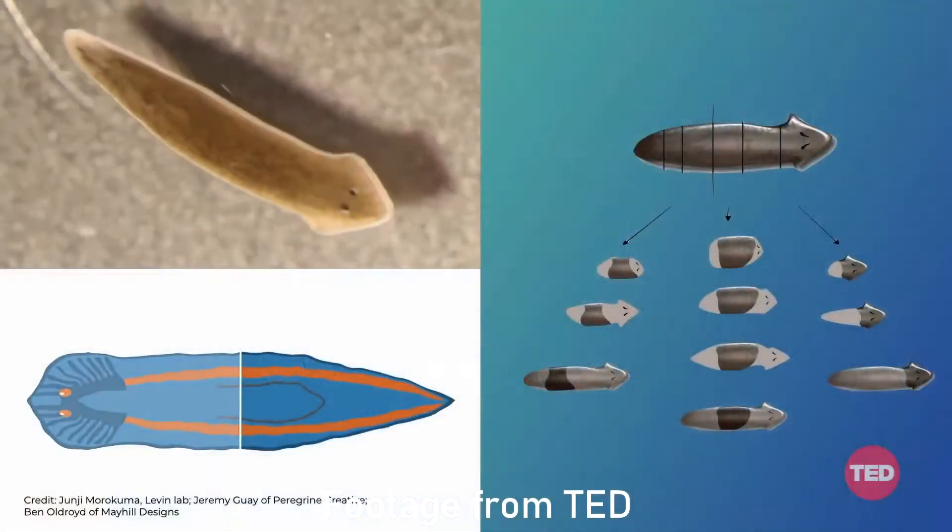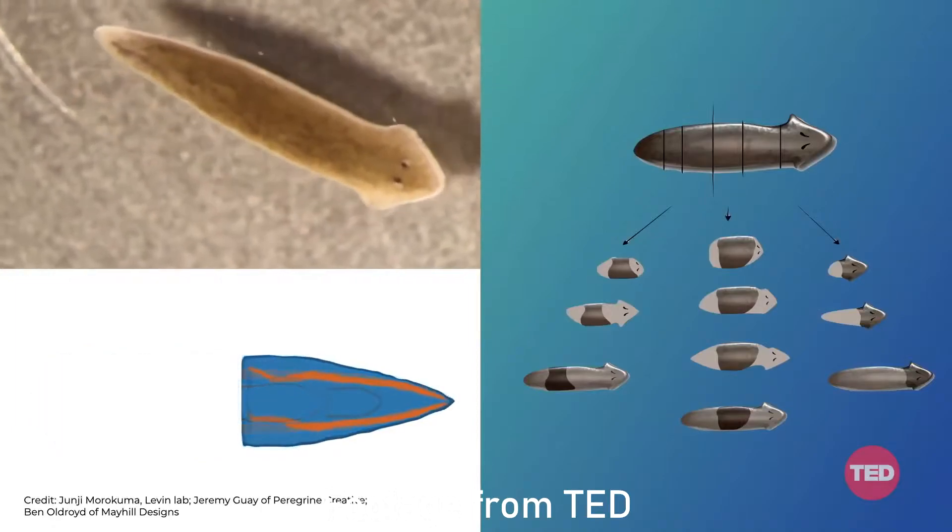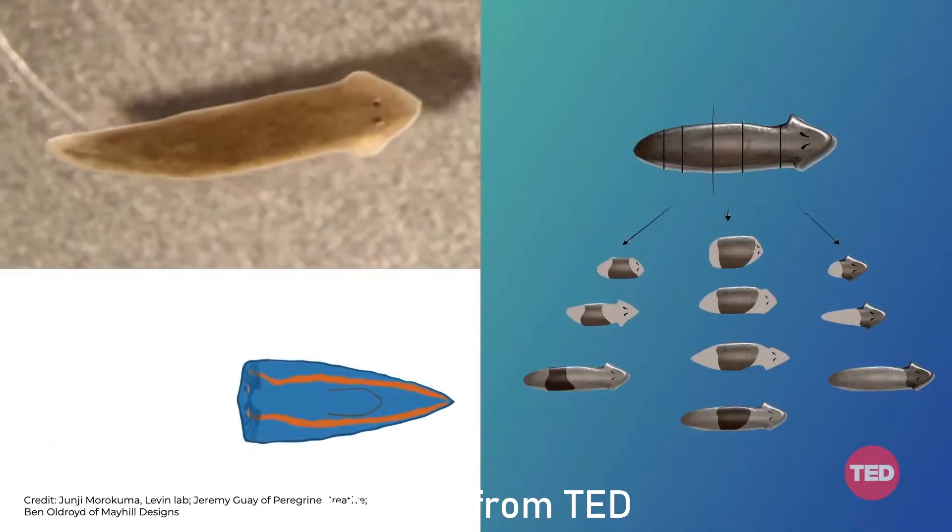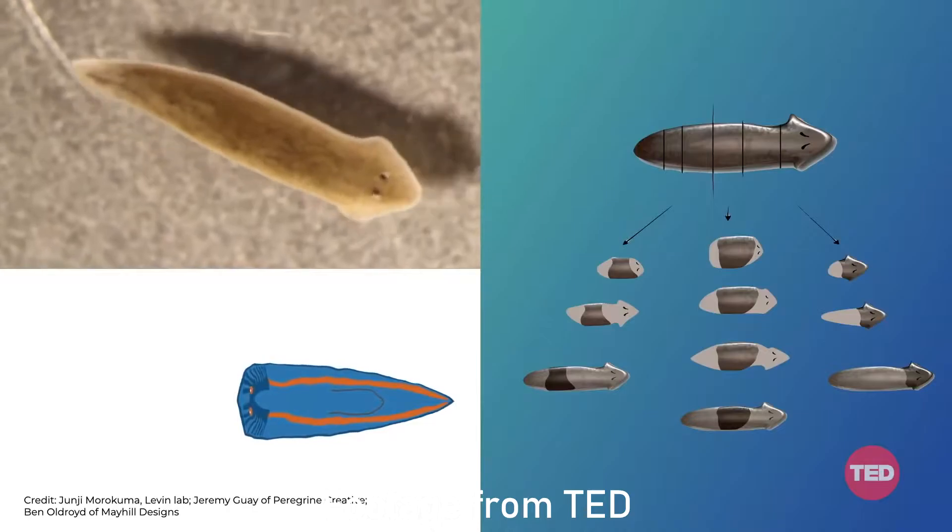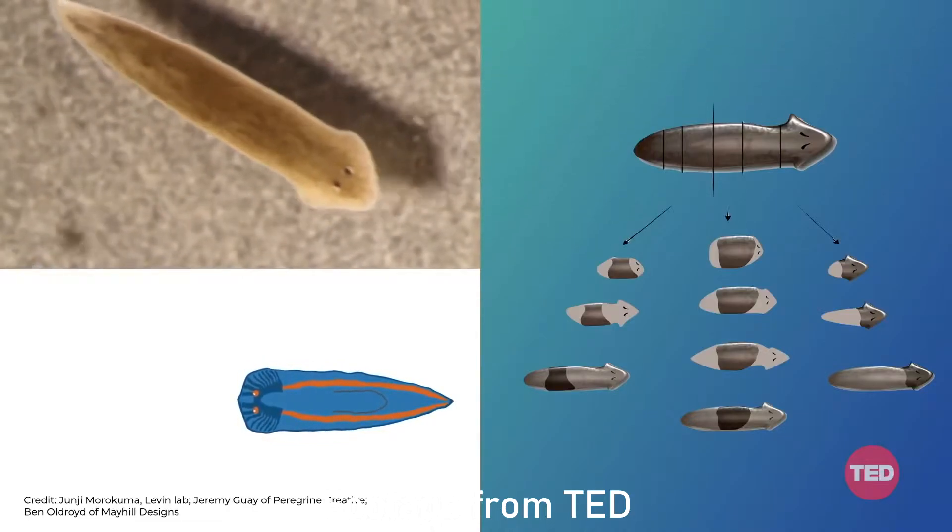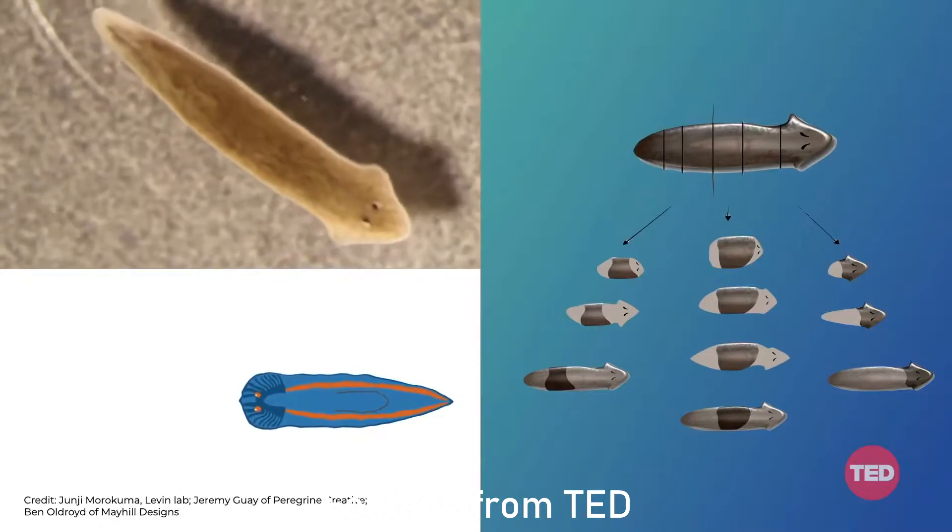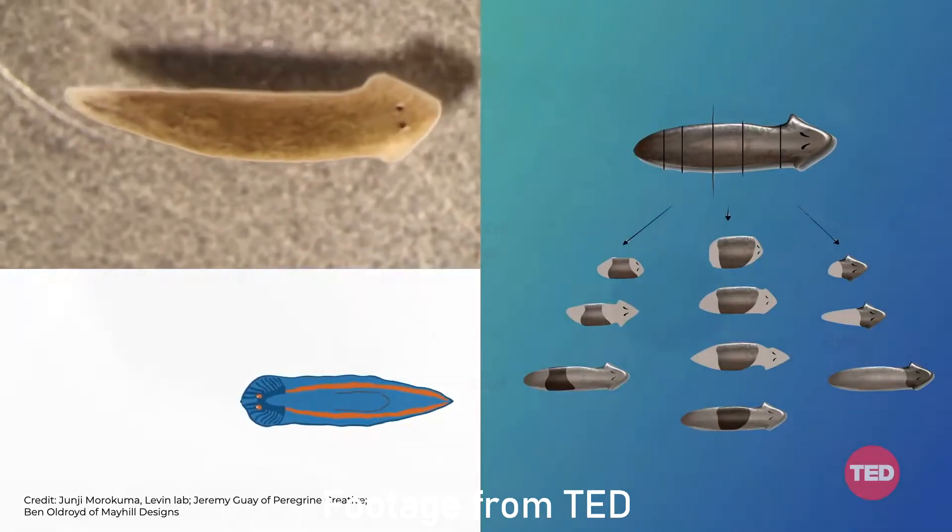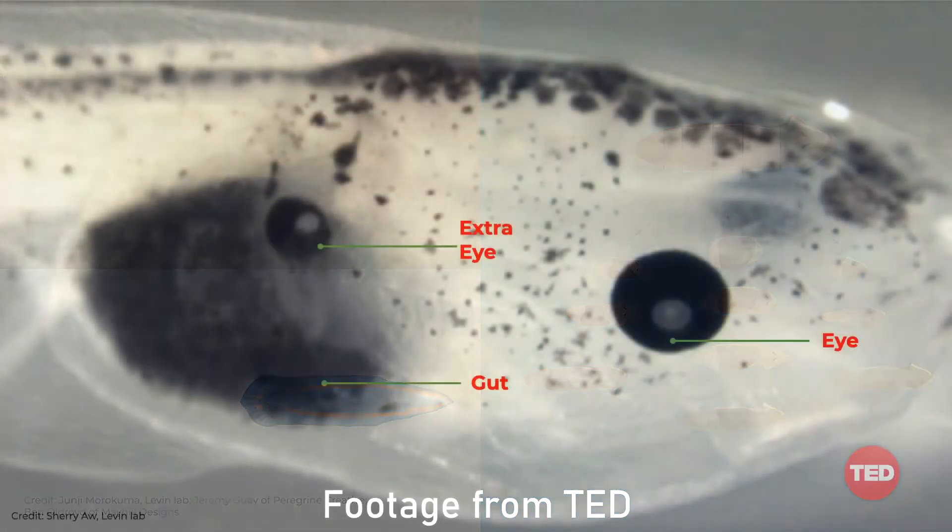This has already been done in an experiment with planaria, also known as flatworms. As scientists experimented by using bioelectricity to communicate with cells within the worms, they successfully convinced these cells to grow an additional eye. As you can see here, the worm has this extra eye located on the gut, which is exactly where the scientists intended for the eye to be grown.